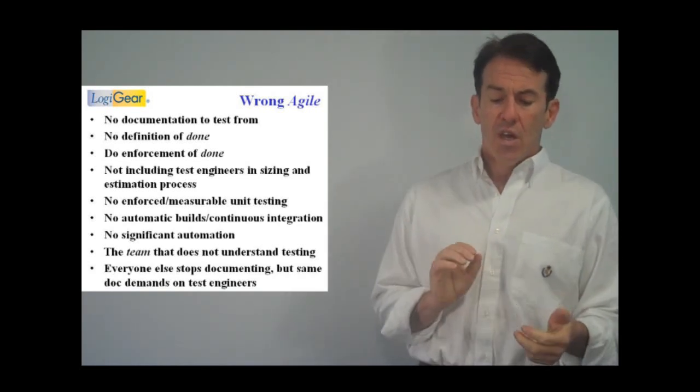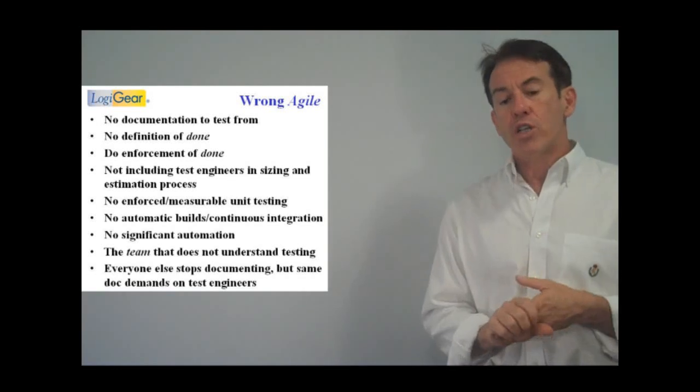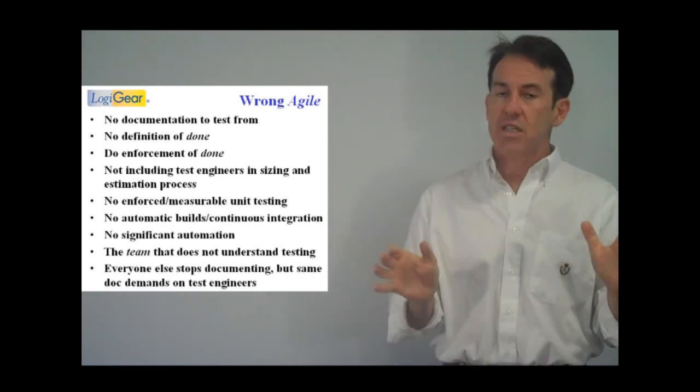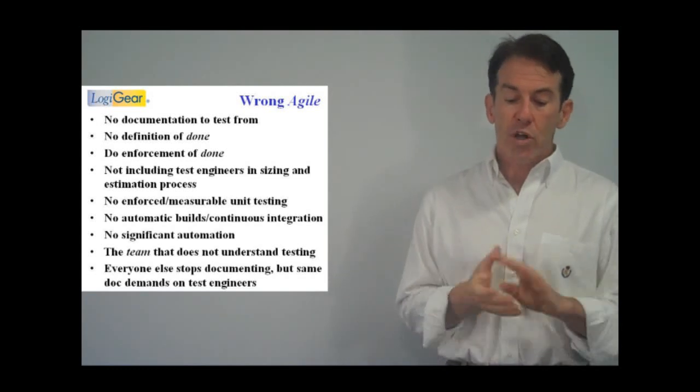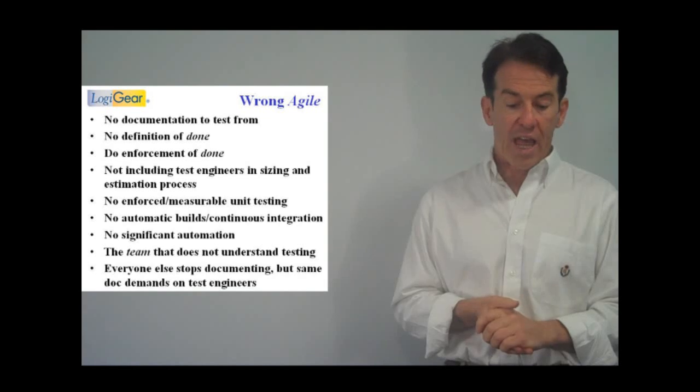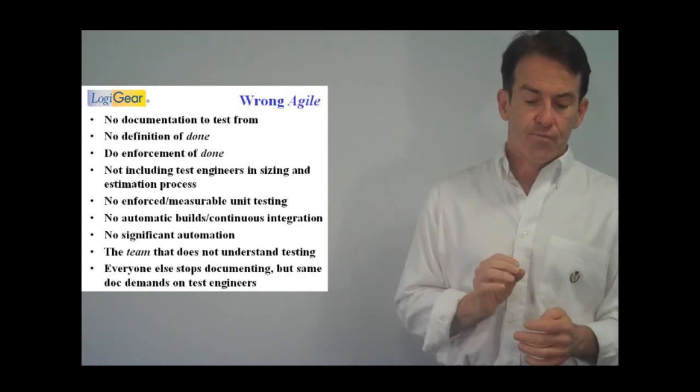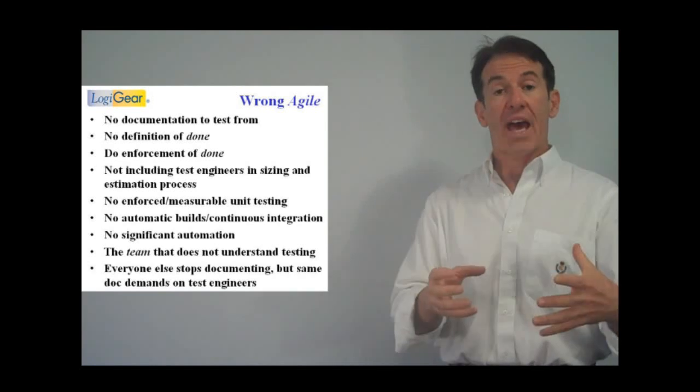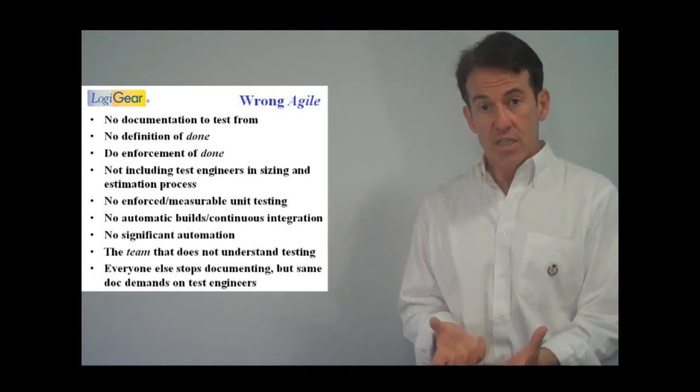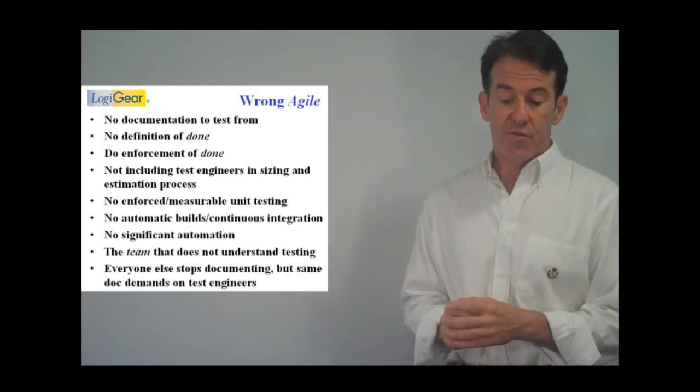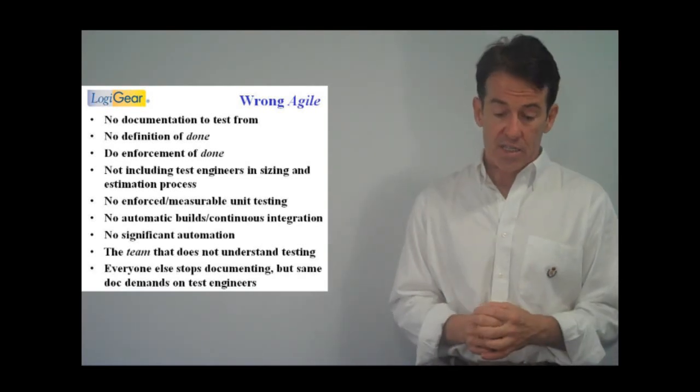So bad sprint, wrong sprint is also no enforced or measurable unit testing. Unit testing is essential. We don't need to discuss that again. No automatic builds, bad sprint. No significant automation, bad, wrong Agile. Agile, where the team doesn't understand what testing is about. Luckily, I think in this move to Agile, teams are seeing more the inside of what happens in testing and are understanding testing better. But it's wrong Agile, it's bad Agile for the team to not understand the nature of testing.